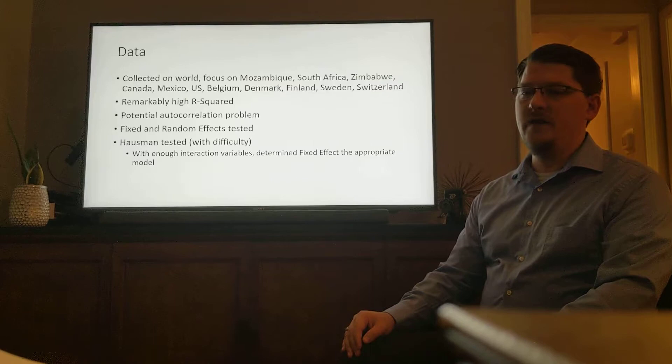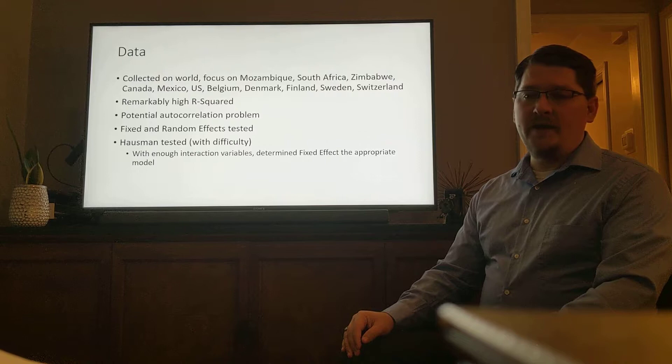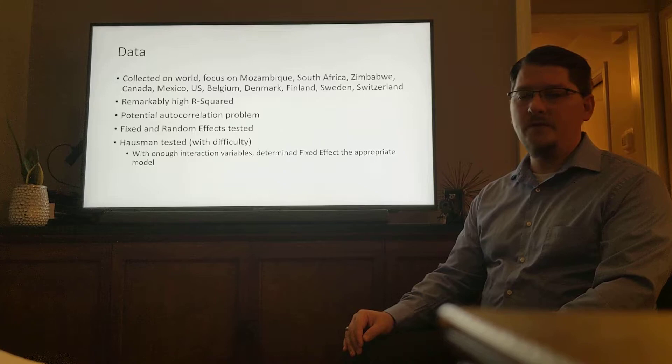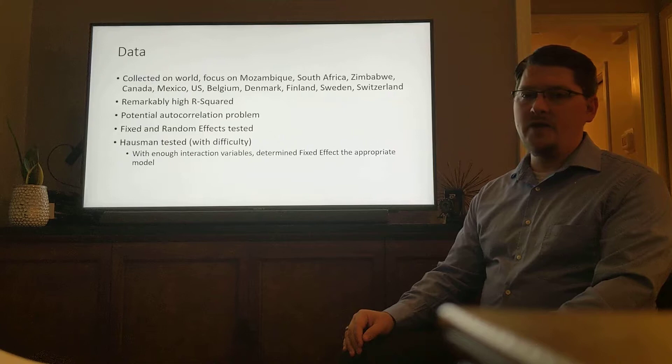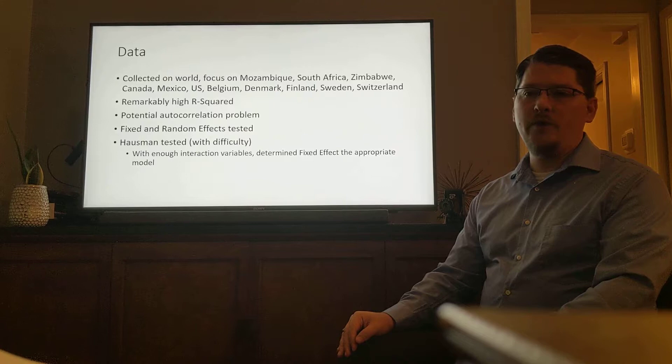In my regressions, I found a remarkably high R-squared of roughly 0.999. I determined that there is likely not a correlation problem with my data. I also took the fixed and random effects and used a Hausman test to determine which to use. I ran into a negative chi-squared, so I had to create several interaction variables, which allowed me to get a properly usable chi-squared and determined that fixed effect regressions were appropriate for both the GDP and the HDI models.